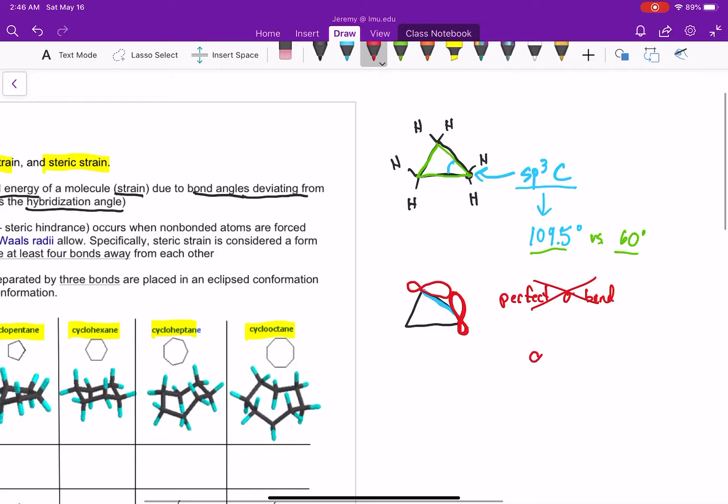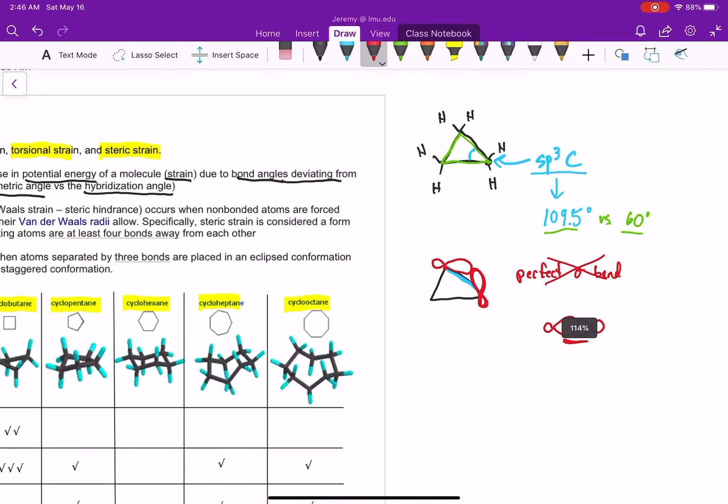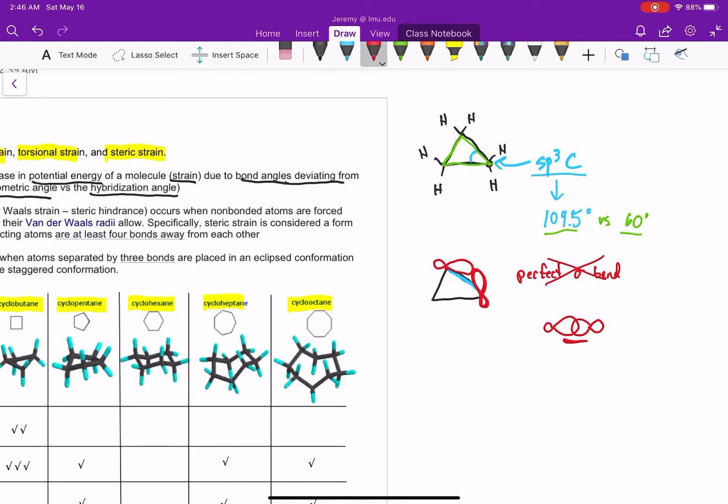We're not getting pure orbital overlap. In a sigma bond, we want good orbital overlap, like as such. The more orbital overlap you have, the stronger the bond. But because this is a triangle, we have poor orbital overlap. And basically what that equals is angle strain. Poor orbital overlap equals angle strain.